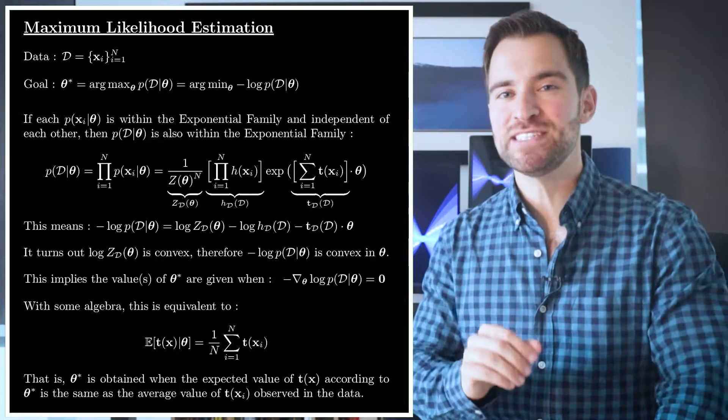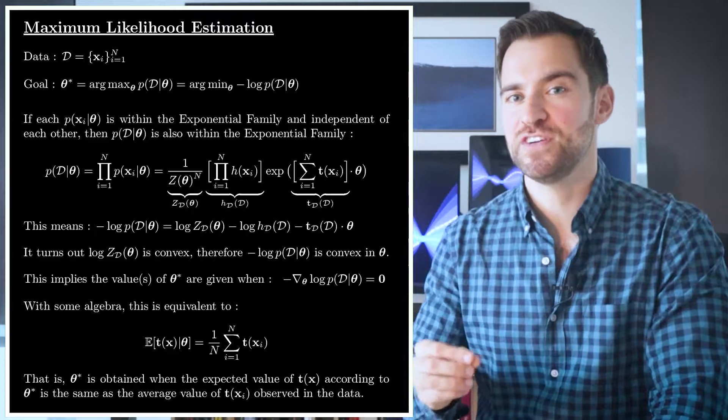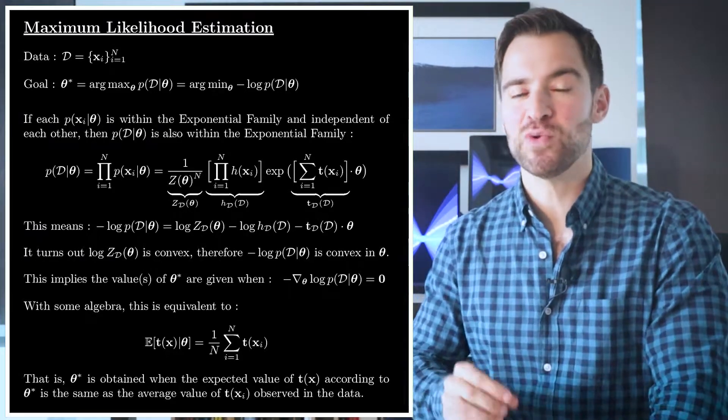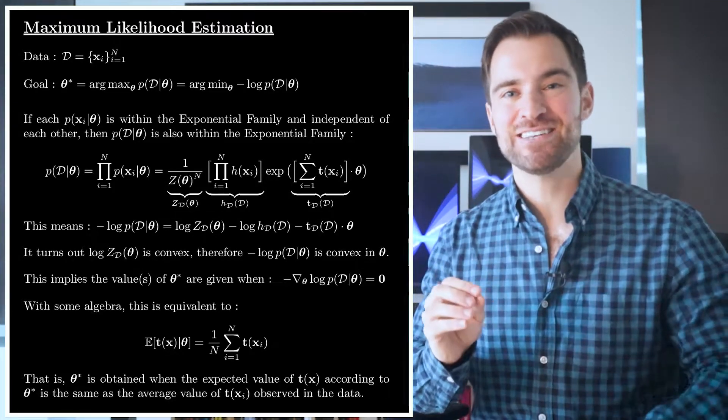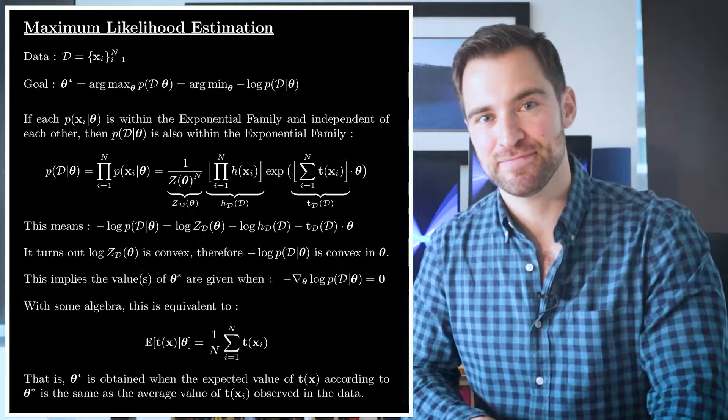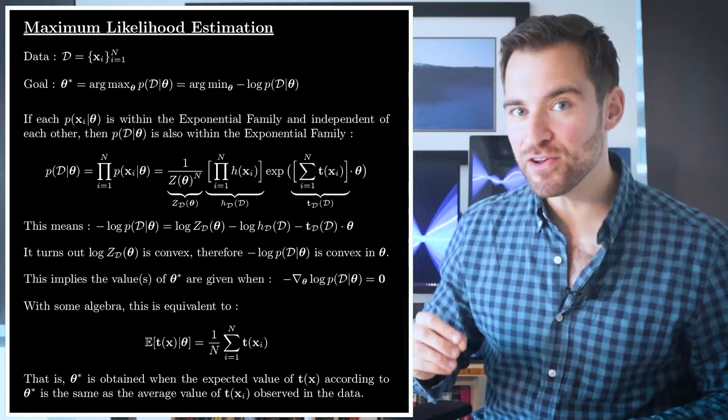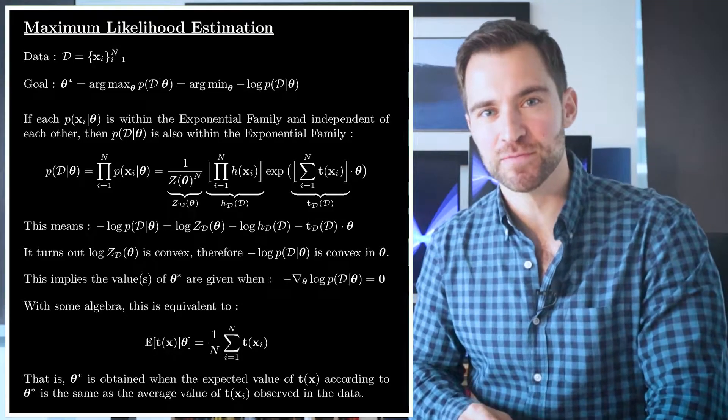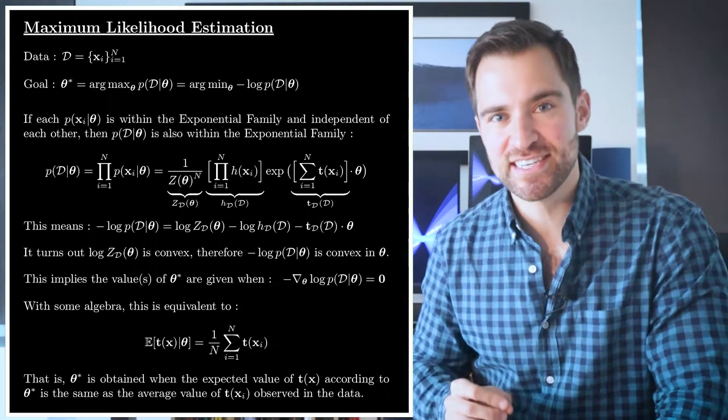And if you're curious about why this is true, then check this out. I'll refer to this as the observed equals expected condition. It's really important, so I'll state it differently. The parameter vector θ determines the distribution over x, which then implies an expected value of the sufficient statistics. If θ is chosen such that this expected value equals the average of the sufficient statistics we see in the data, then we know θ is in fact the maximum likelihood estimate.